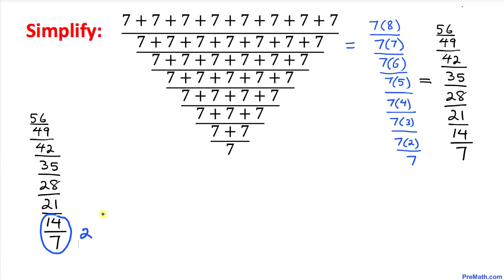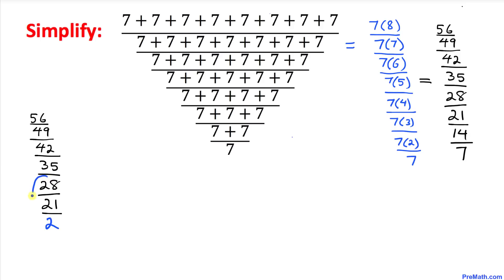Now if we focus on 21 divided by 2, this cannot give us a whole number, so we have to be very careful. Therefore let's focus on these three numbers: the fraction 28 divided by 21 divided by 2. I've copied it down here. Our bottom number is 2, so I'm going to multiply by 2 on top and multiply by 2 on the bottom — this 2 and 2 cancel.